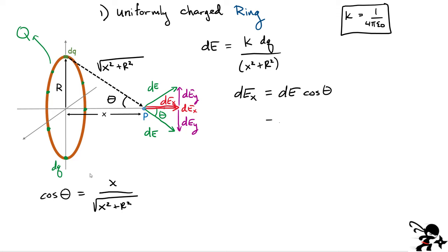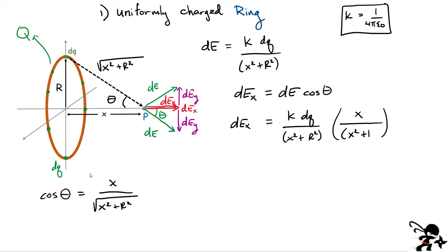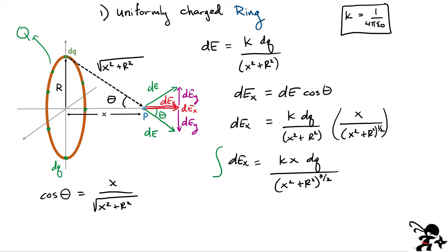We're going to substitute everything in. The tiny X component from one charge can be written as K DQ divided by X squared plus R squared, multiplied by cos of the angle theta, which is X over the square root of X squared plus R squared — or to the one-half power. Grouping everything together, DEX equals K X DQ divided by X squared plus R squared, all to the three-halves power. That's one little component of DE. To find the total field, I integrate all of them. The total electric field has to be in the X direction due to symmetry.